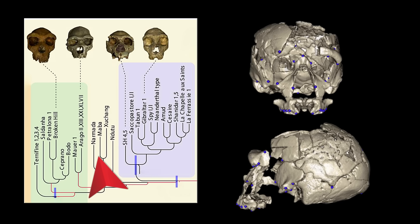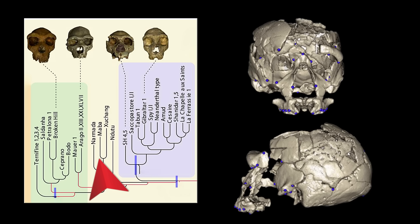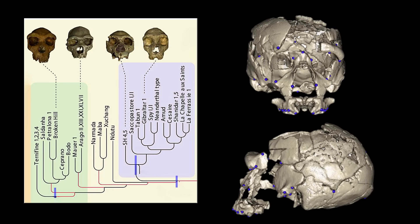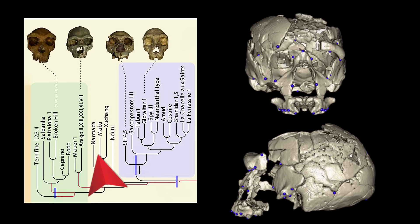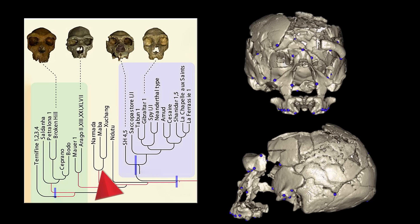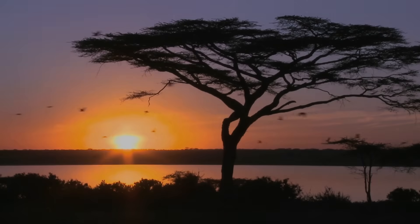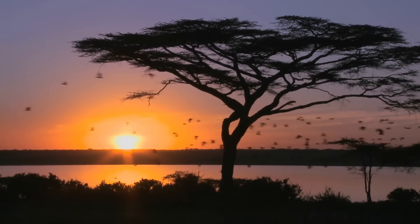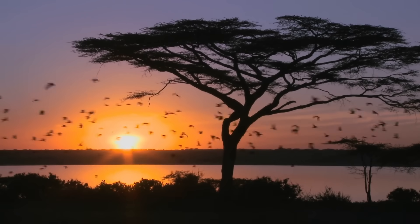Remarkably, the findings suggest that the African Ndutu cranium belongs to the same group as the Narmada cranium from the Indian subcontinent, and the Maba cranium and the Xuchang cranium from East Asia, discovered in a region now known as China. According to scientists, gene flow could have been bidirectional, so some of the traits seen in Africa could have originated in Asia.